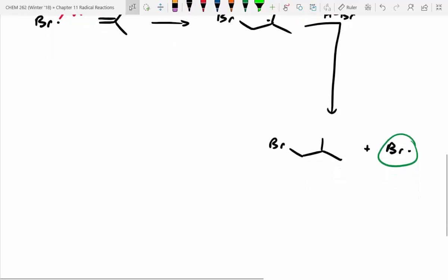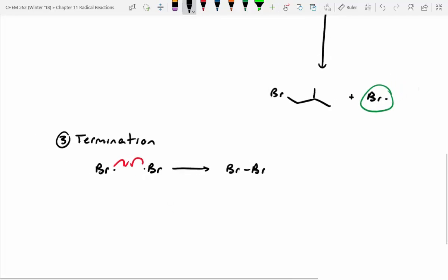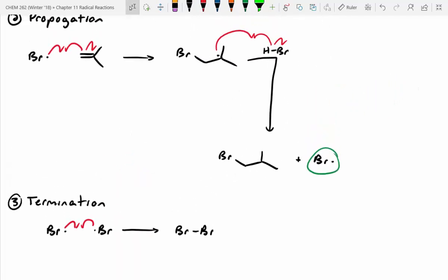And like I said, with termination, the only thing that matters is that you have two radicals, doesn't matter which ones, combining together to give you a neutral organic compound. But the propagation step is an essential step for this reaction that explains why the bromine's not installed on the more substituted carbon. Instead of worrying about having the most stable carbocation, we're actually worried about having the most stable radical, and that changes the regiochemistry for everything.